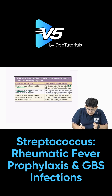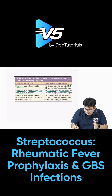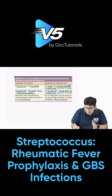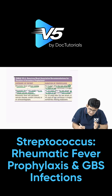For rheumatic fever with carditis but no residual valvular disease, the prophylaxis duration is 10 years after the last attack or 21 years of age, whichever is longer. Previously it was five years and 21 years; now it is 10 and 21, because the rheumatic fever is with carditis.